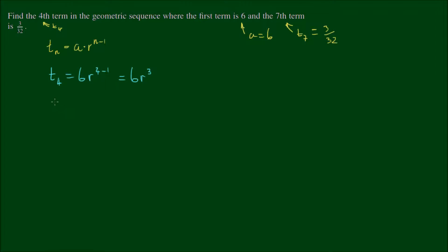So let's do a bit of problem solving. We know that T7 equals 6 by the common ratio to the power of 6, and that's equal to 3 on 32. So let's just take this part of the equation and work with that.